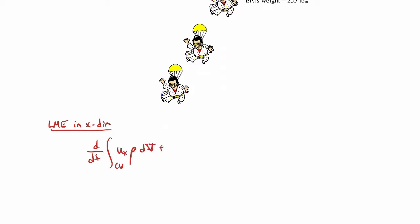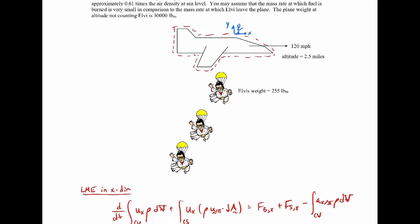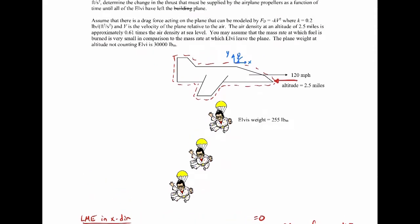Let's go ahead and write out the linear momentum equation in the x direction — that's the direction we care about. We need to have the acceleration term in our linear momentum equation because we're using a coordinate system that's accelerating. The body force in the x direction is going to be zero; we're assuming that gravity's acting downward. For surface forces in the x direction, we have the drag force acting on the aircraft, which is minus kv squared.